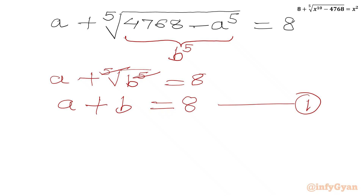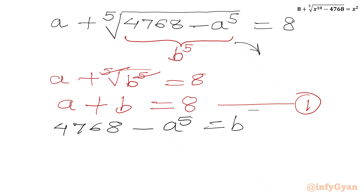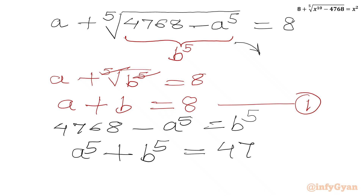We will consider a plus b equals 8 as equation 1. From the substitution, we can write 4768 minus a to the power 5 equal to b to the power 5. Or equivalently, a to the power 5 plus b to the power 5 equals 4768. Let us call this equation 2.